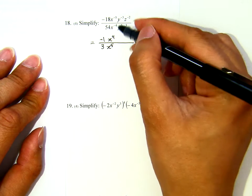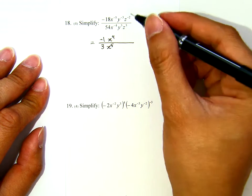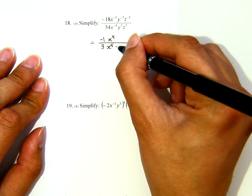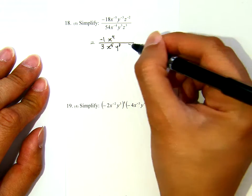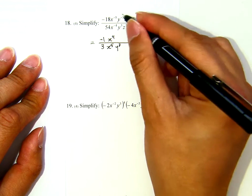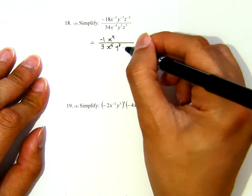Now for the y's, only the top one has negative exponent. So I will keep the one already on the denominator. And the numerator which has negative exponent, I will bring it down.